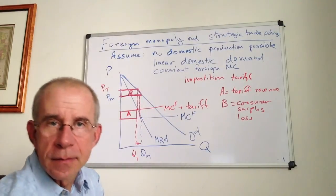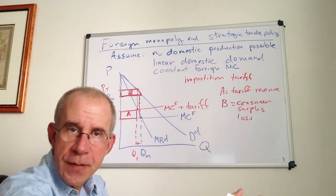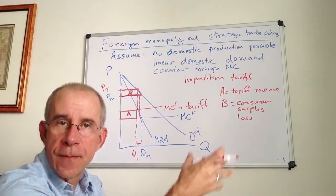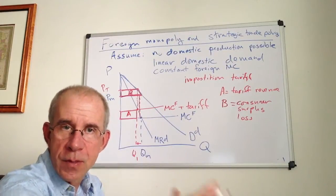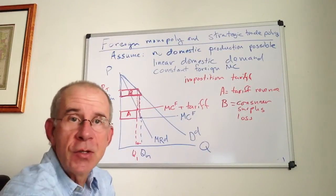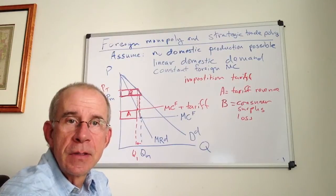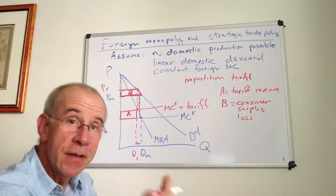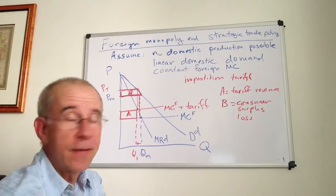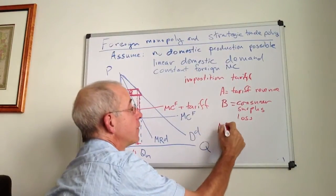So we've got profits being shifted from the foreign firm to the domestic treasury. But you have the imposition of these costs to domestic consumers. Costs, benefits. Well, the net effect depends on the difference.